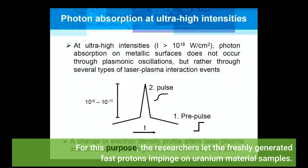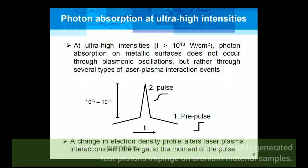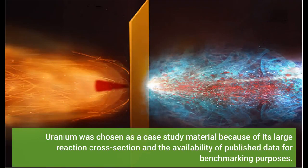For this purpose, the researchers let the freshly generated fast protons impinge on uranium material samples. Uranium was chosen as a case study material because of its large reaction cross-section and the availability of published data for benchmarking purposes.